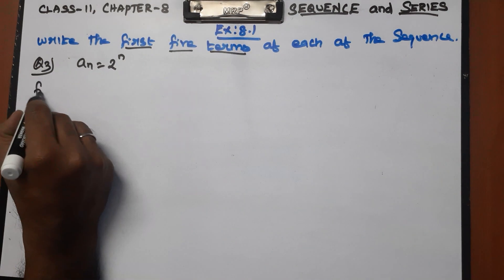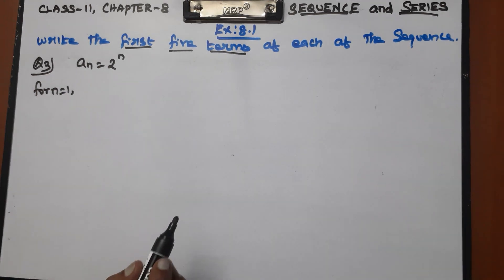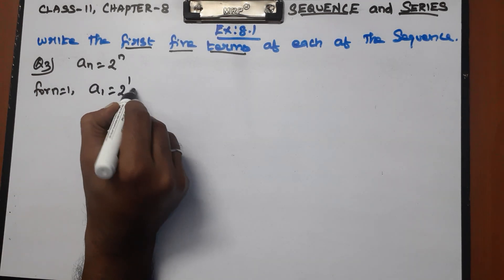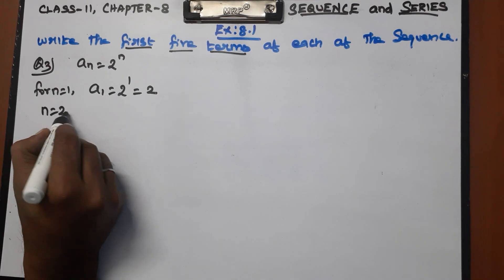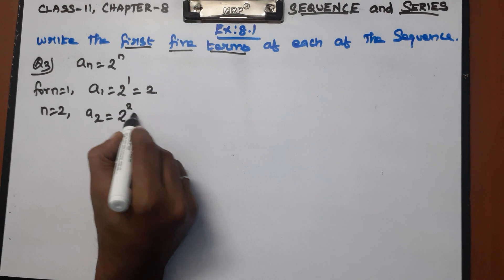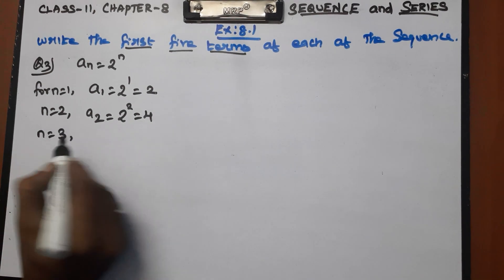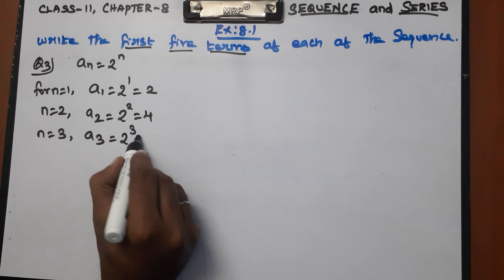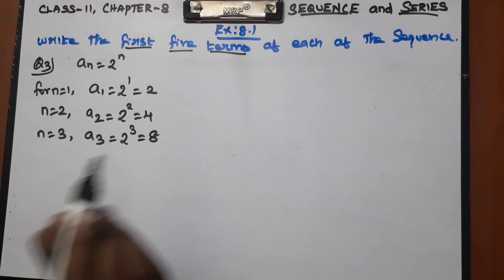For question 4, an equals 2 to the power n. Substitute n equal to 1: a1 equals 2 to the power 1 equals 2. Next, n equal to 2: a2 equals 2 squared equals 4. Next, n equal to 3: a3 equals 2 to the power 3. Two 2s are 4, two 4s are 8.